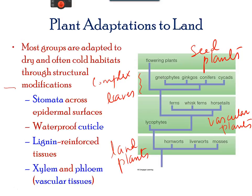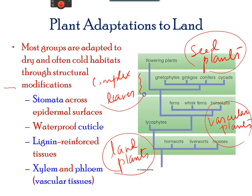Many groups of plants have adapted to the environment for extreme heat and cold conditions. There are seed plants, vascular plants, land plants, and plants with complex leaves. Stomata are tiny openings across the backside of leaves and control water leaving the cell. For plants living in hot conditions, there is a waterproof lipid layer, a cuticle that prevents dryness.